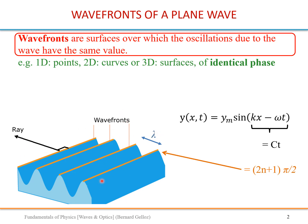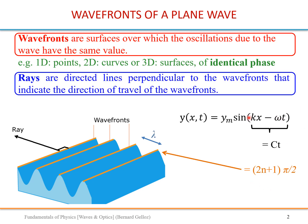This is a case in 2D, so in that case the wave fronts are lines. In one dimension it would just be points — you would just have dots along the curve. In 3D, wave fronts will be surfaces of identical phases. Rays are directed lines perpendicular to the wave fronts that indicate the direction of travel of the wave fronts. We won't use the concept of rays with sound or with a string, but it will be useful in optics.